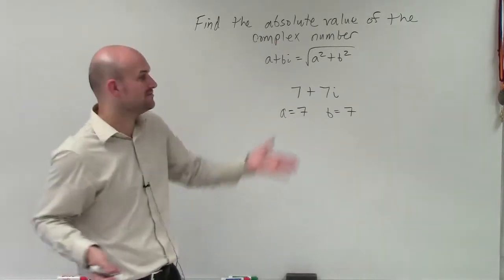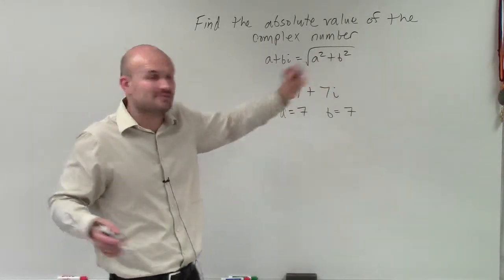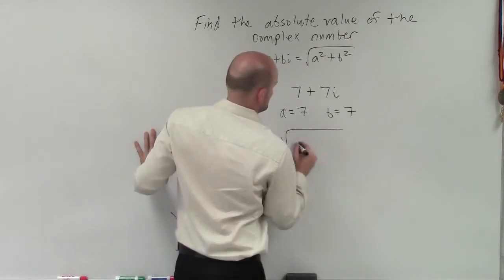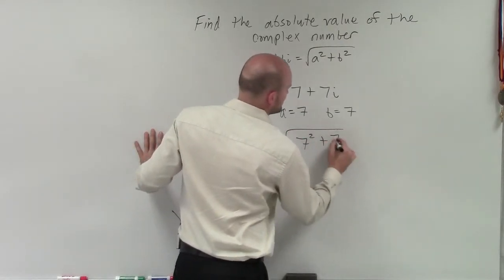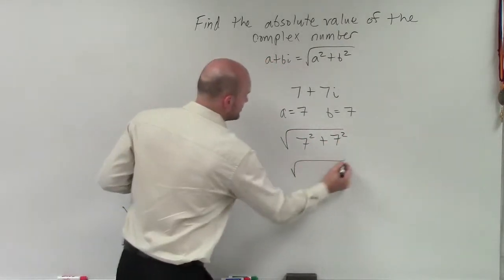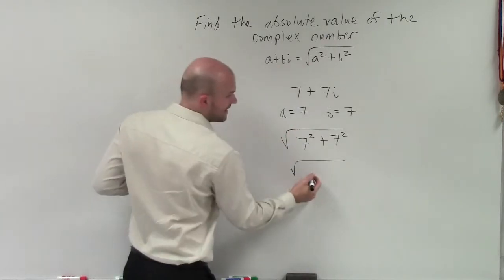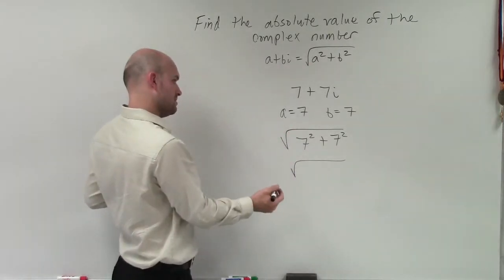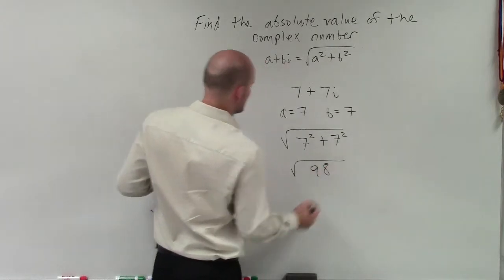So again, to find the absolute value, I need to take the square root of the sum of my a and b squared. So that's going to look like this, 7 squared plus 7 squared. Well, that equals 49 plus 49 is going to be 98.